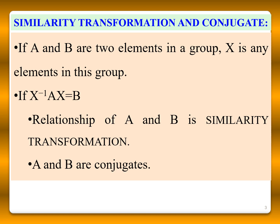Suppose, if A and B are two elements in a group, and X is any element in this group, and if X inverse A X is equal to B, then the relationship of A and B is similarity transformation, and A and B are conjugates.